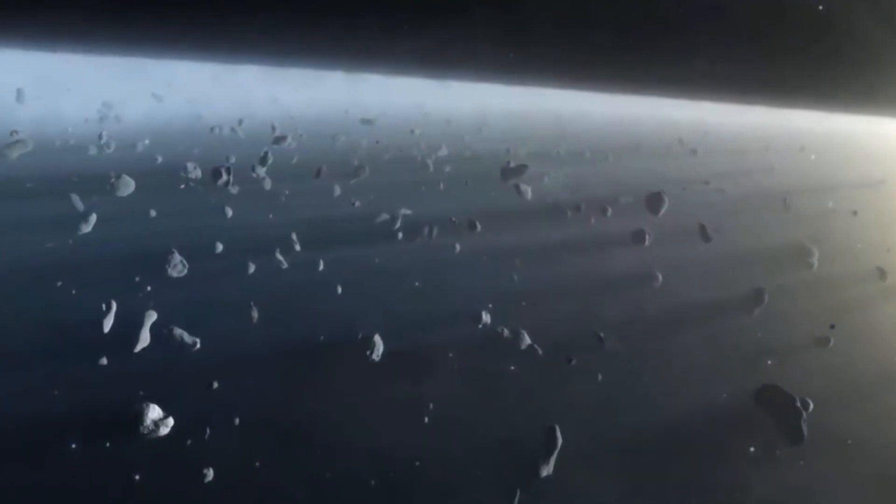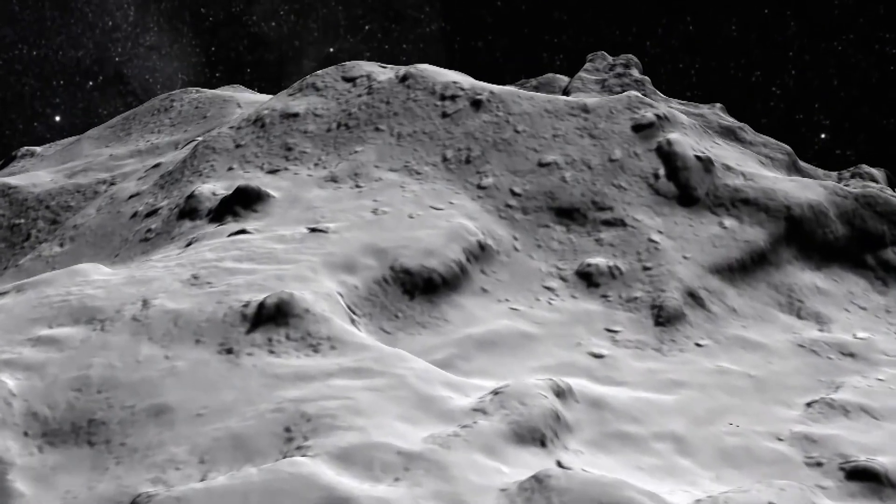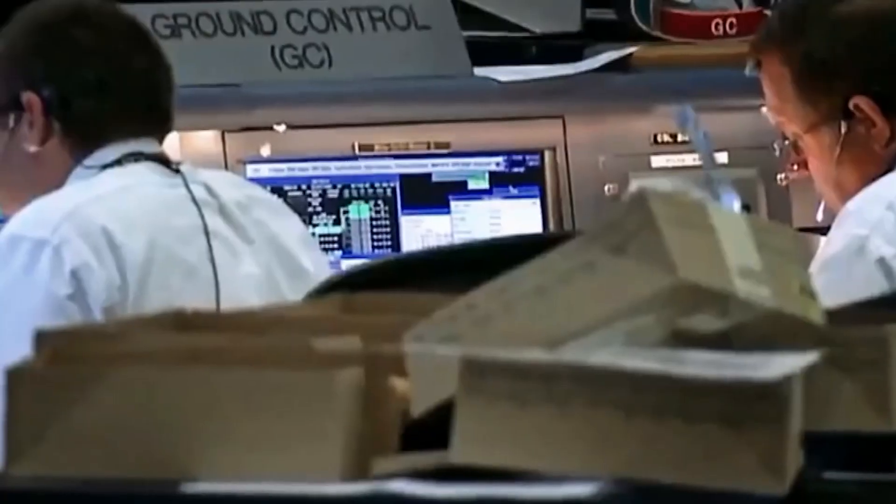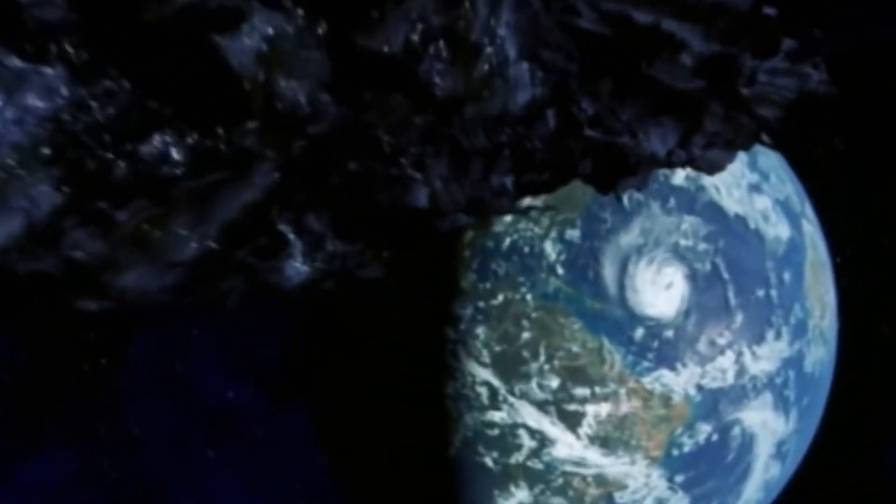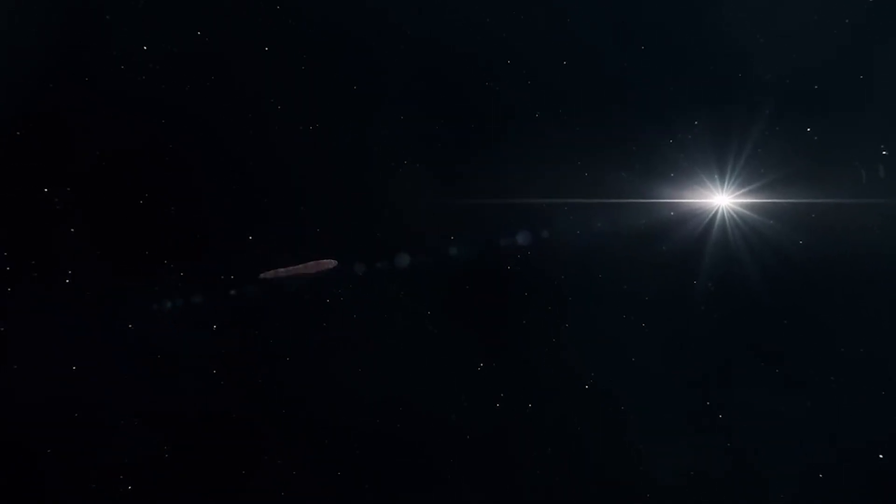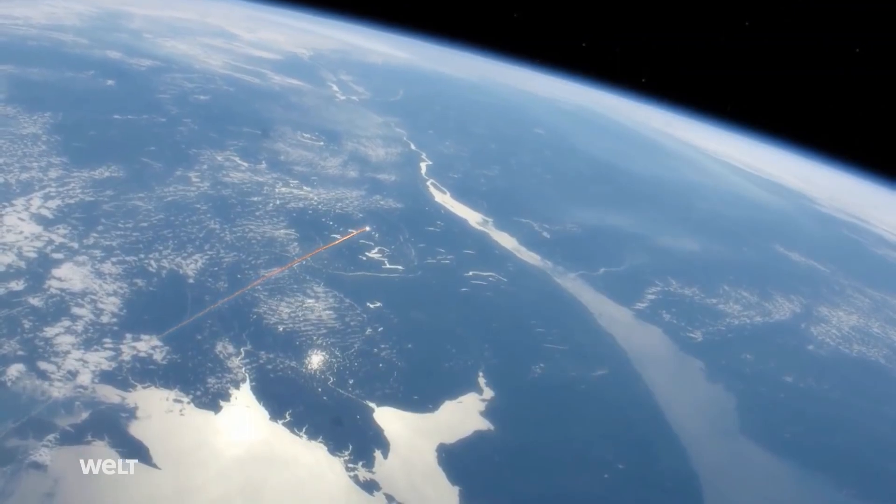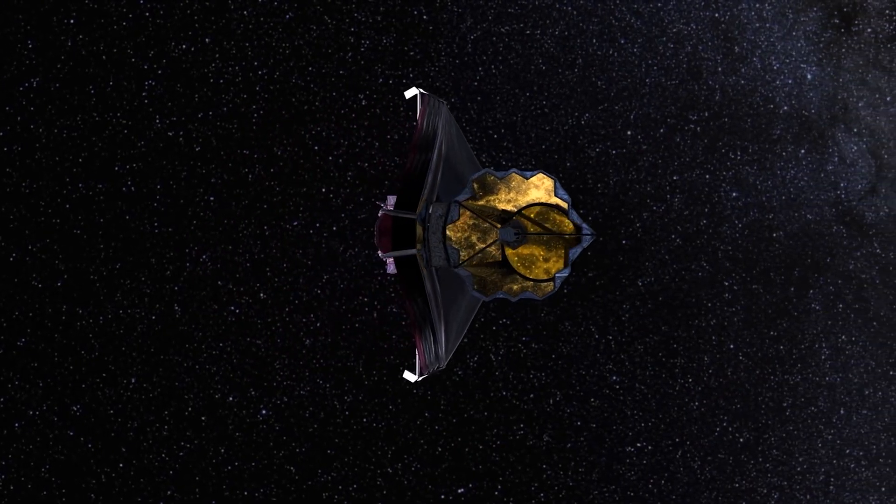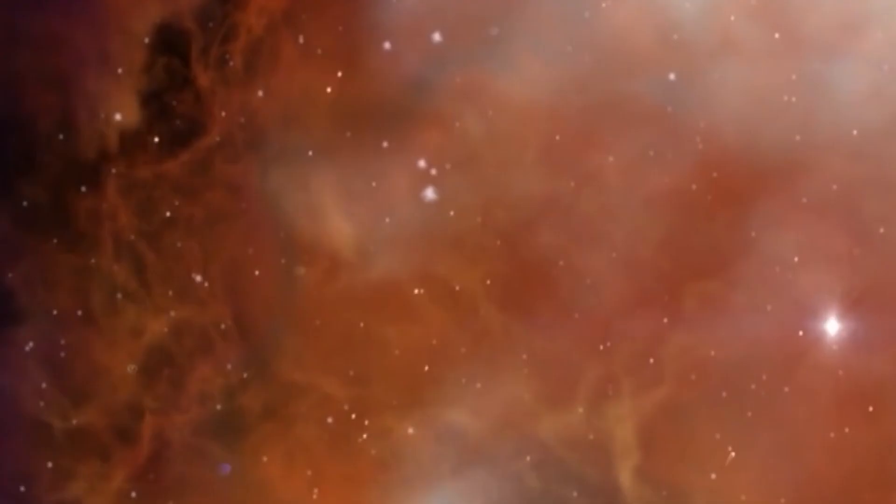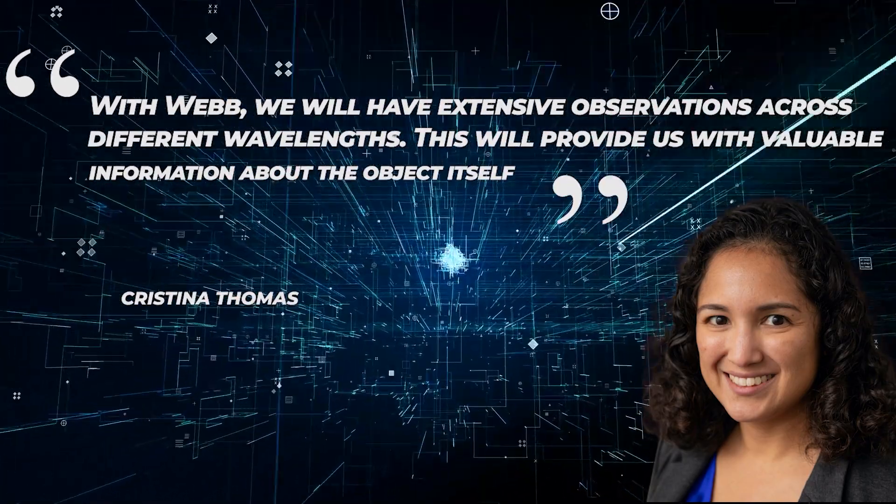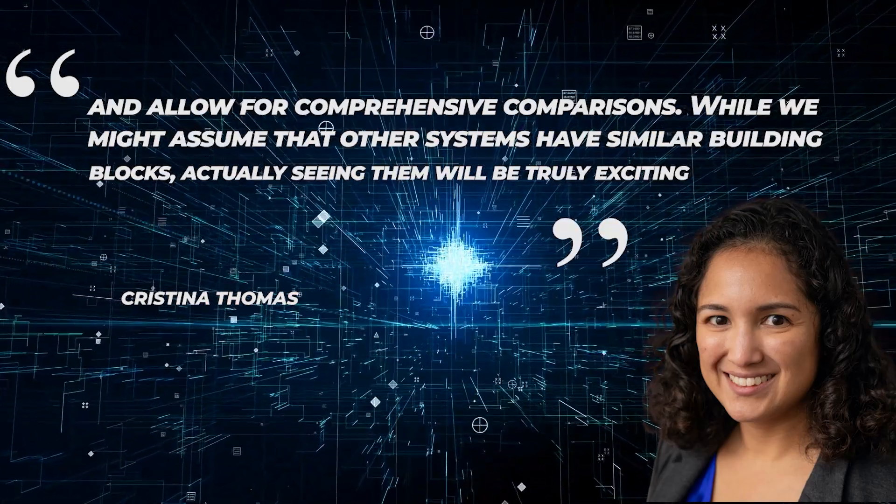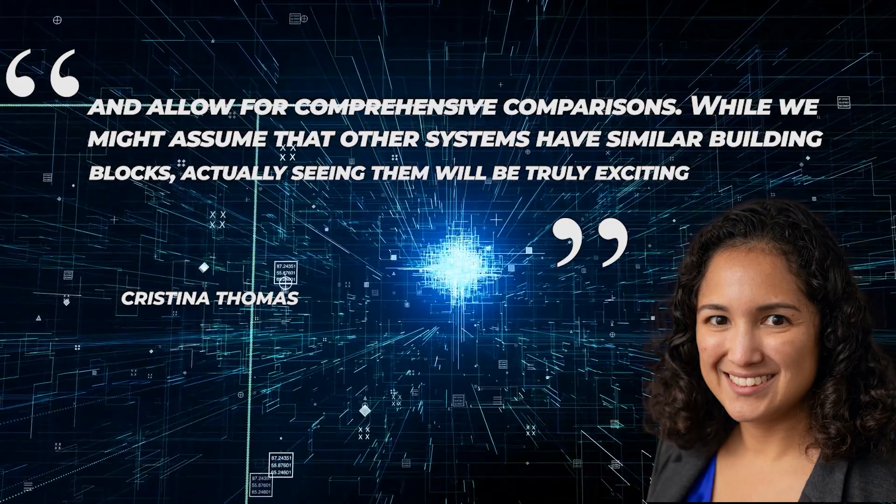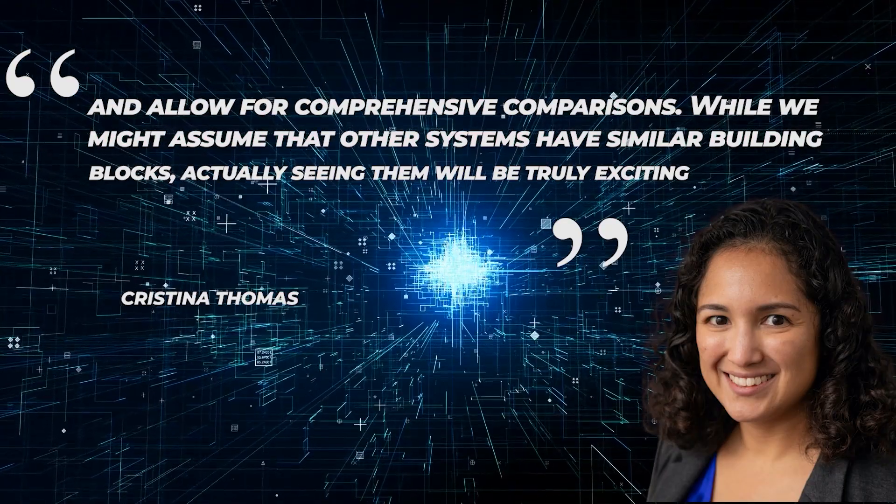Thomas says that asteroids are not all the same. Unlike what many people think, they are extremely diverse in many ways. The ability to observe near and mid-infrared wavelengths of an asteroid will allow scientists to study its unique characteristics such as silicates, mineral signatures, surface hydration, and composition. As Oumuamua, the cigar-shaped interstellar object, displayed asteroid-like traits, Thomas and her team used it as a test case to understand what Webb can reveal if another interstellar asteroid enters our galactic vicinity. Thomas says with Webb, we will have extensive observations across different wavelengths. This will provide us with valuable information about the object itself and allow for comprehensive comparisons. While we might assume that other systems have similar building blocks, actually seeing them will be truly exciting.